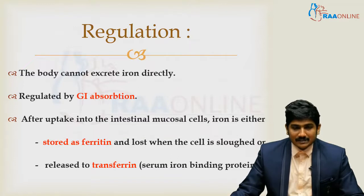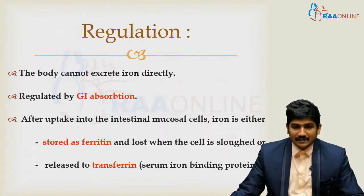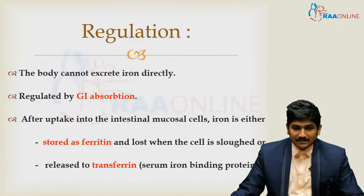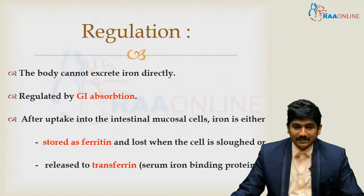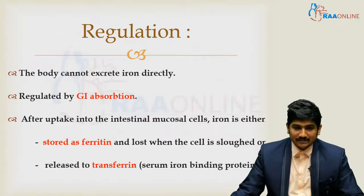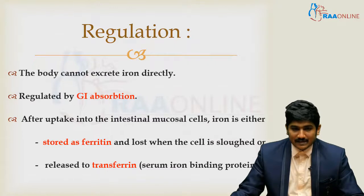After uptake into the intestinal mucosal cells, the iron is either stored as ferritin in the epithelial cells of the intestine and lost when the cell is sloughed off, or in case of iron deficiency, this ferritin is transferred into the systemic circulation. The iron is then transferred toward ferritin, which is the serum iron-binding protein.